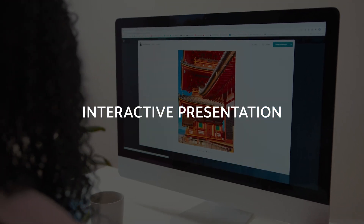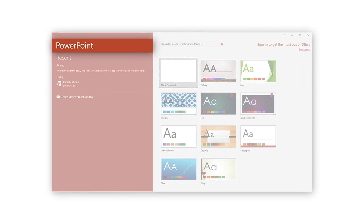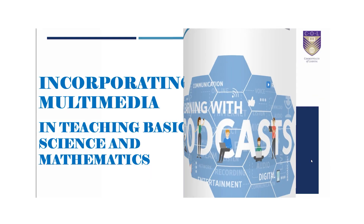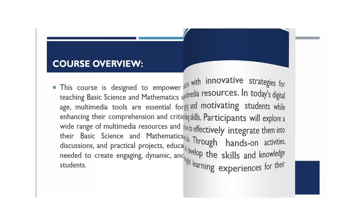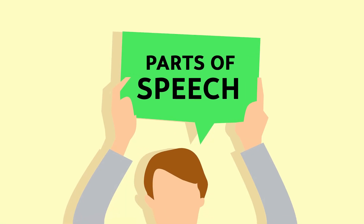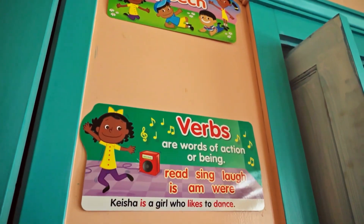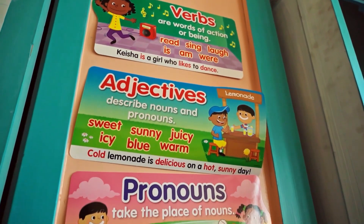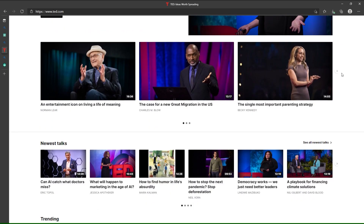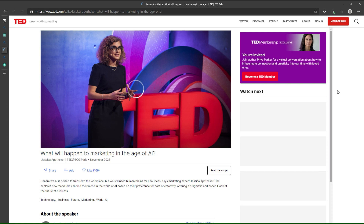Interactive presentations: use presentation software like PowerPoint or Google Slides to create visually appealing and interactive slides that best describe your key learning objective. For instance, if your lesson is on parts of speech, it is necessary to include graphics, videos, or animations to illustrate concepts and processes. You can also utilize educational videos from reputable sources that explain social problems, like documentaries and programs.